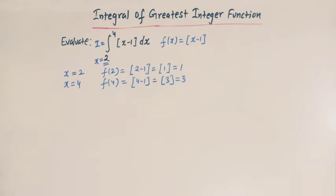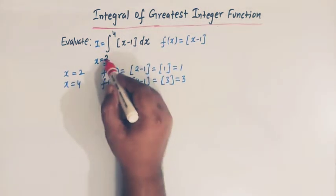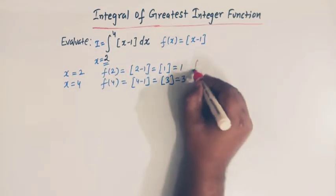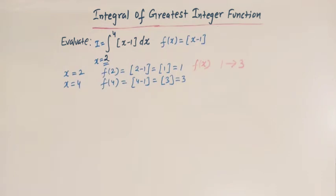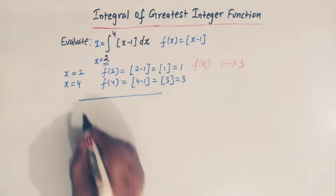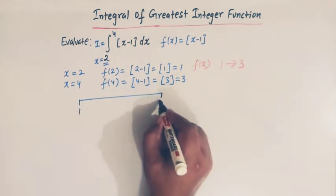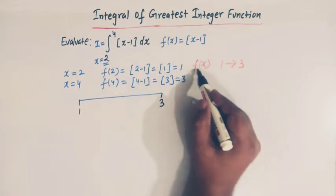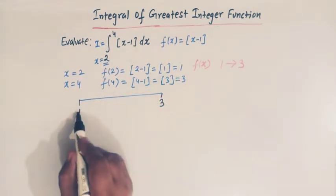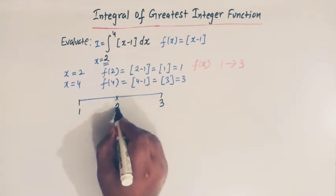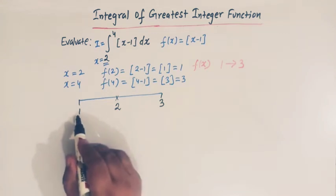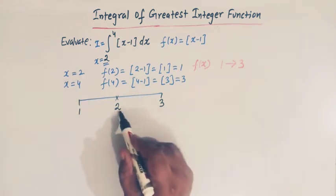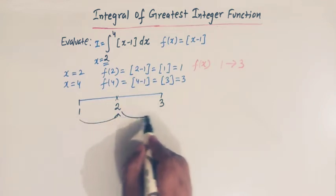So what we observe is that when x varies from 2 to 4, then f(x) varies from 1 to 3. Let us draw the number line with 1 and 3 marked. We see that the integer 2 lies between 1 and 3, giving us two intervals: from 1 to 2 and from 2 to 3.